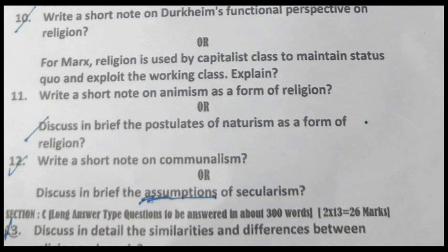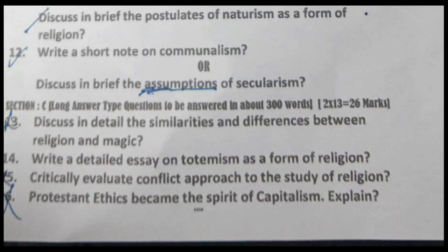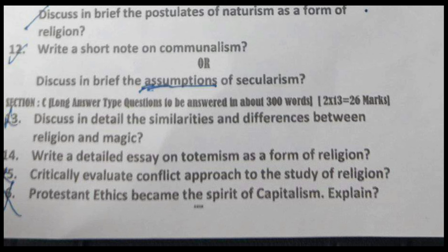Question 12: write a short note on communalism, or discuss the assumptions of secularism. Section C: long answer type questions to be answered in about 300 words. 2 into 13 equals 26 marks. Question 13: discuss in detail the similarities and differences between religion and magic. Question 14: write a detailed essay on totemism as a form of religion. Question 15: critically evaluate the conflict approach to the study of religion. Question 16: Protestant ethics and the spirit of capitalism — explain. So this was all regarding the syllabus and model question paper for BA sixth semester Sociology Religion and Society.